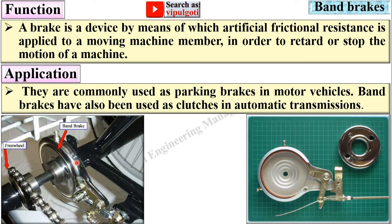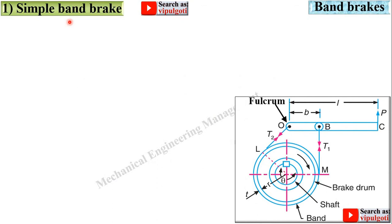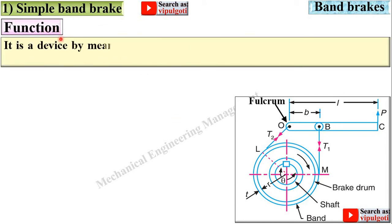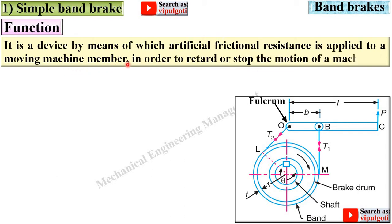Let's start with the first one: simple band brake. This figure of the simple band brake you can definitely use in the examination also. It is a device by means of which artificial frictional resistance is applied to a moving machine member in order to retard or stop the motion of a machine.